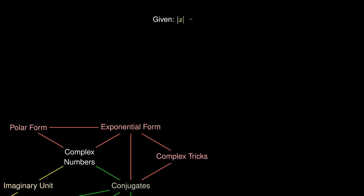For example, if we know that the modulus of z equals 1 and we are trying to find the modulus of (z + 4i)/(1 - 4iz), at first glance it seems rather challenging. We write out the expression and recall that since |z| = 1, z·z* = 1. We then ask: where in our expression do we see a 1?